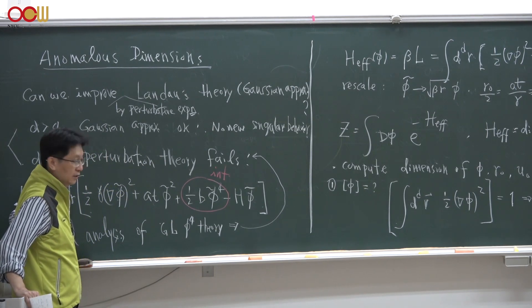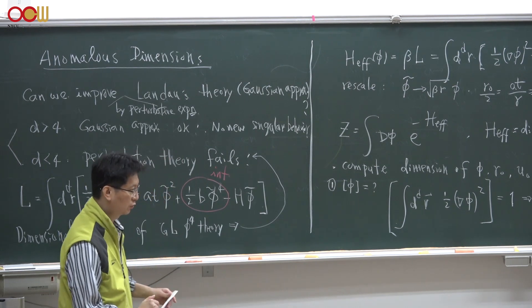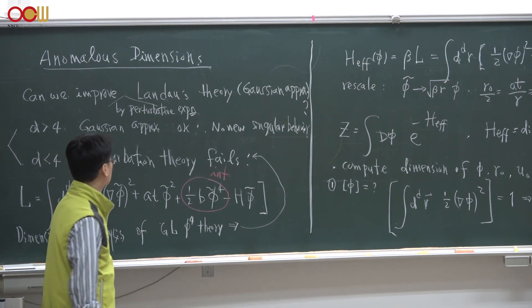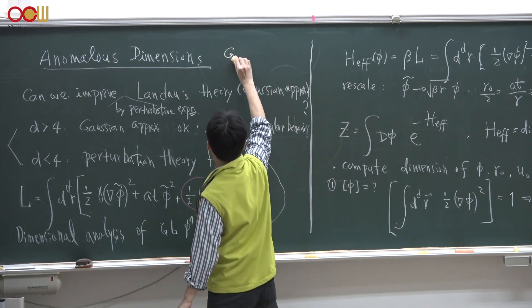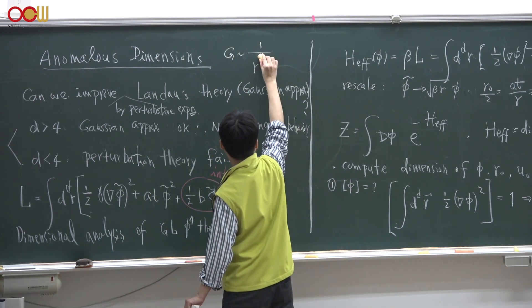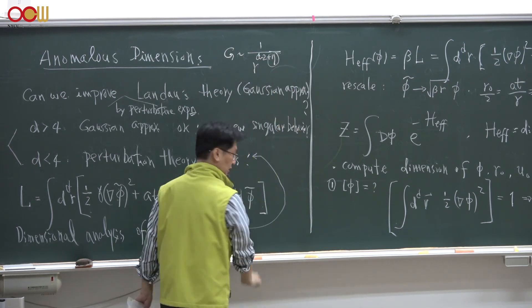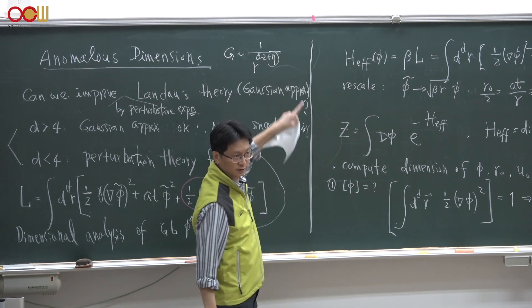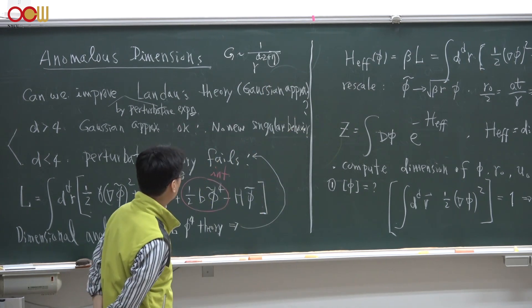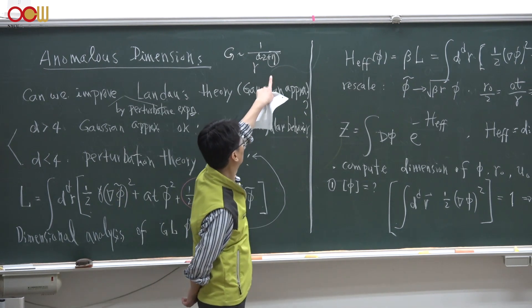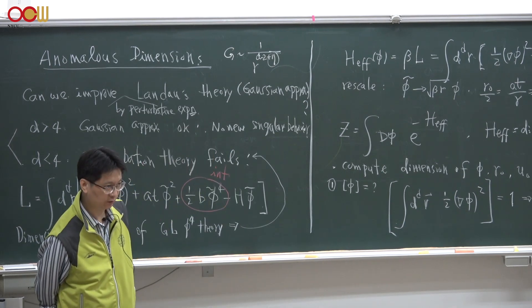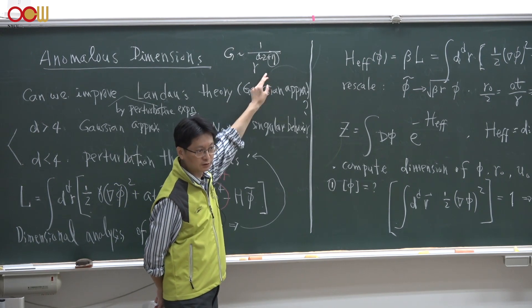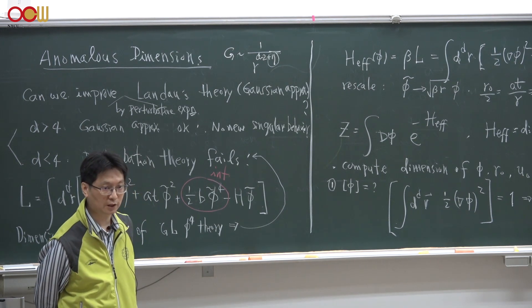Dimensional analysis is a very useful tool for any theory in condensed matter. In particular, we will see that the anomalous dimension — which we already discussed as the extra exponent eta in the spatial correlation function — is nonzero. Our naive Gaussian theory leads to eta equal to zero, which is not an accurate result. In this chapter we will see how this anomalous exponent eta emerges when we perform this dimensional analysis.